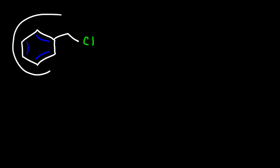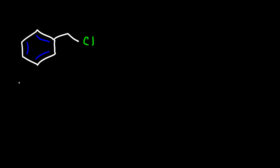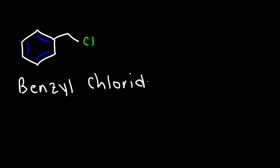What if we have a benzene ring and a CH2 group followed by a chlorine atom? Just the benzene ring is a phenyl group, but the phenyl group plus this extra carbon, which totals seven carbons, is called benzyl. So this is called benzyl chloride. Remember: a phenyl group has six carbons, and a benzyl group has seven carbons — the benzene ring plus one additional carbon.